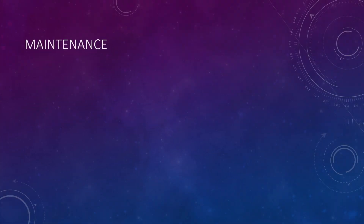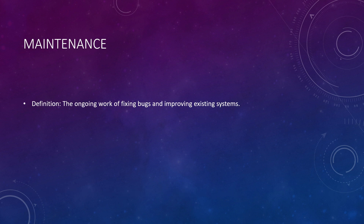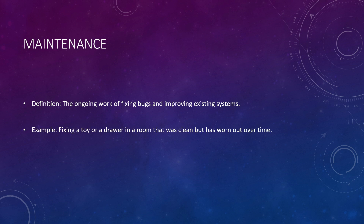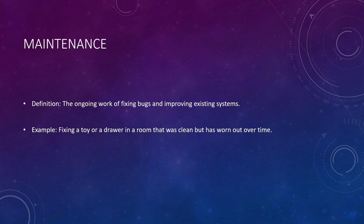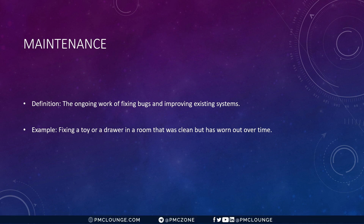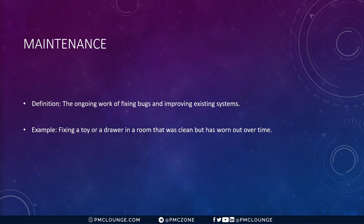Now let's talk about maintenance. Maintenance is the ongoing work of fixing bugs and improving existing systems. Think of it like this: your room was clean, but over the course of a few months the bookshelf got messier, and you need to spend some time cleaning it up. Maintenance is the work you do to fix small issues and keep the entire software system in good condition. It can involve fixing bugs and updating systems.